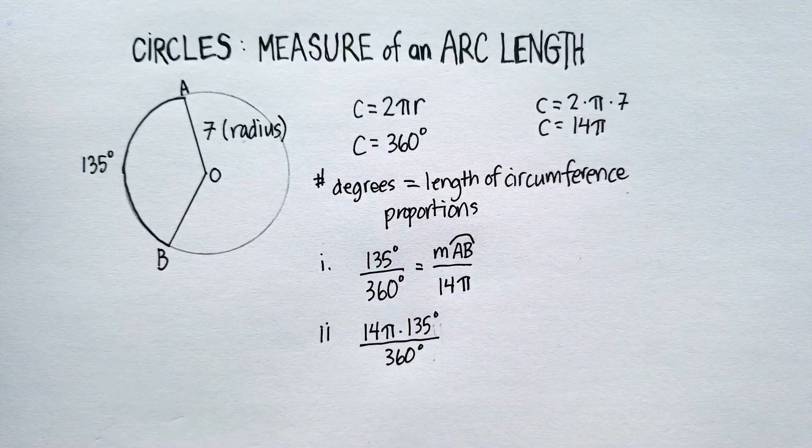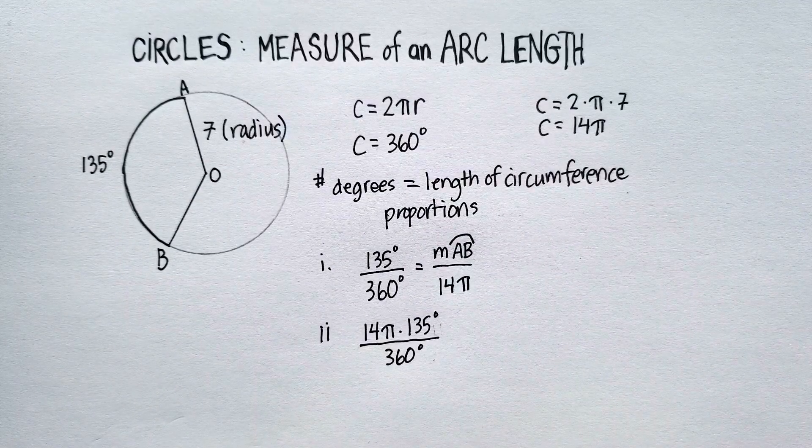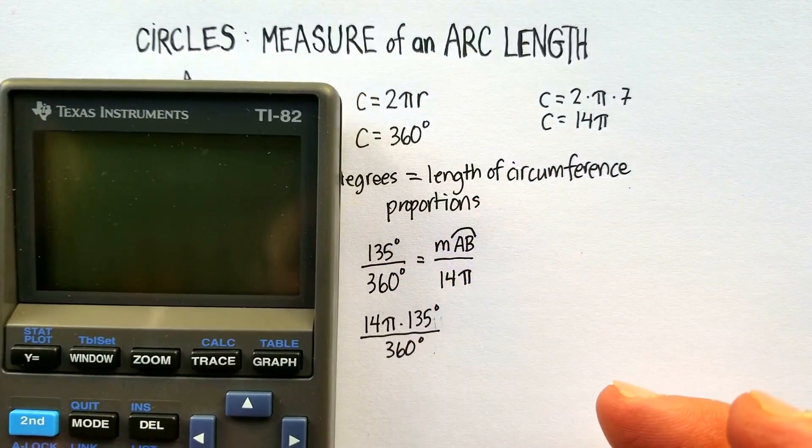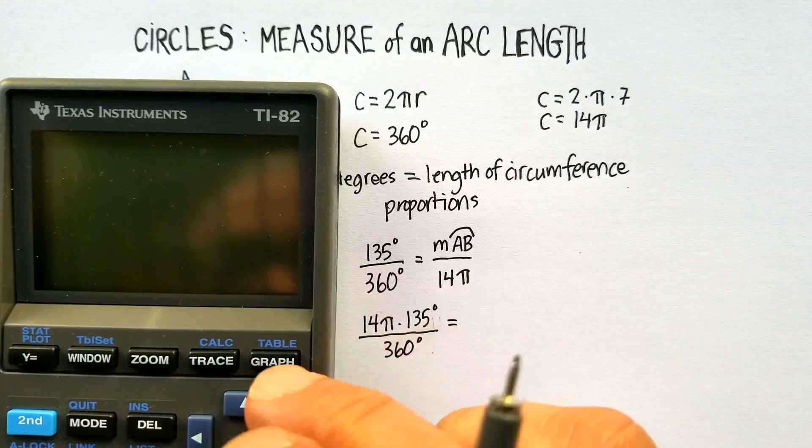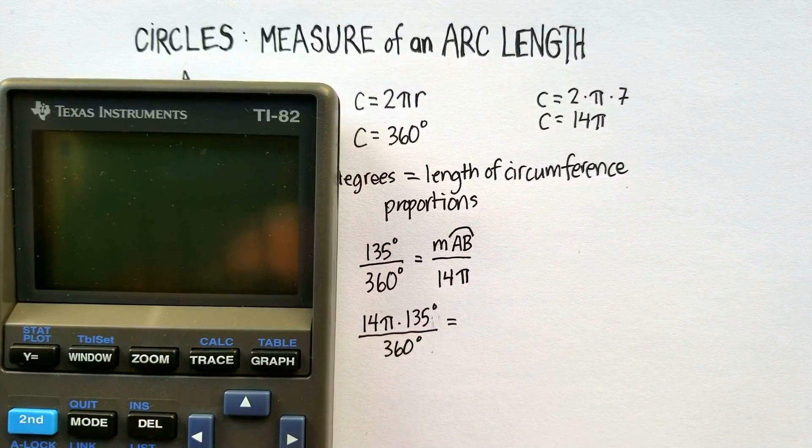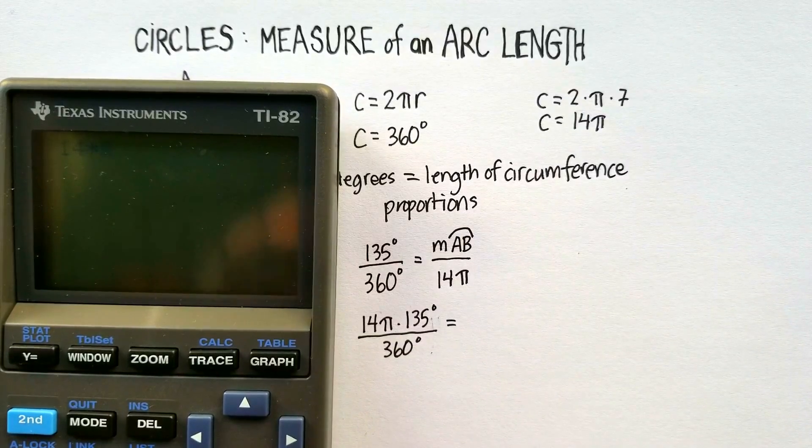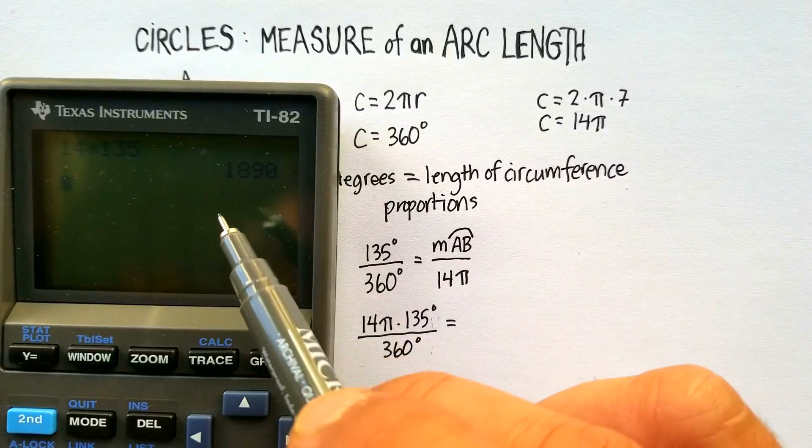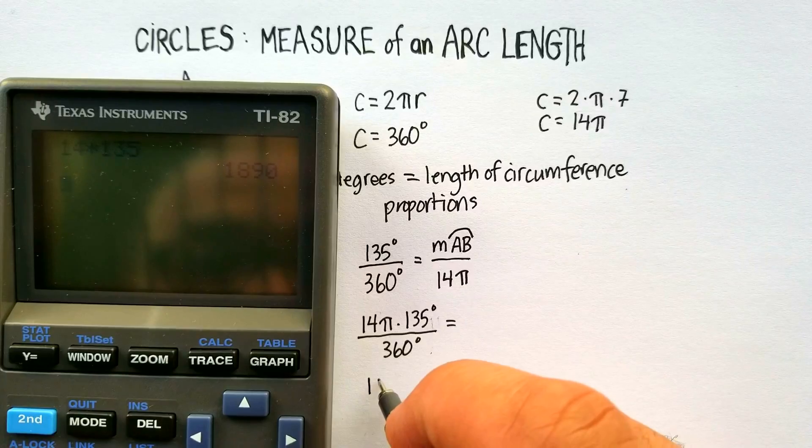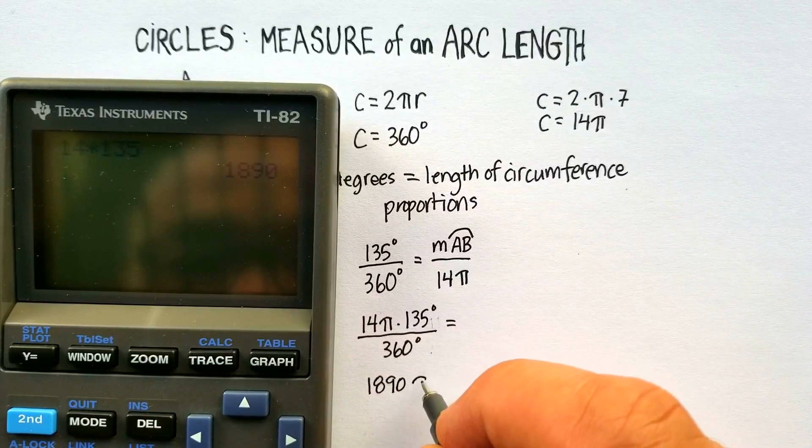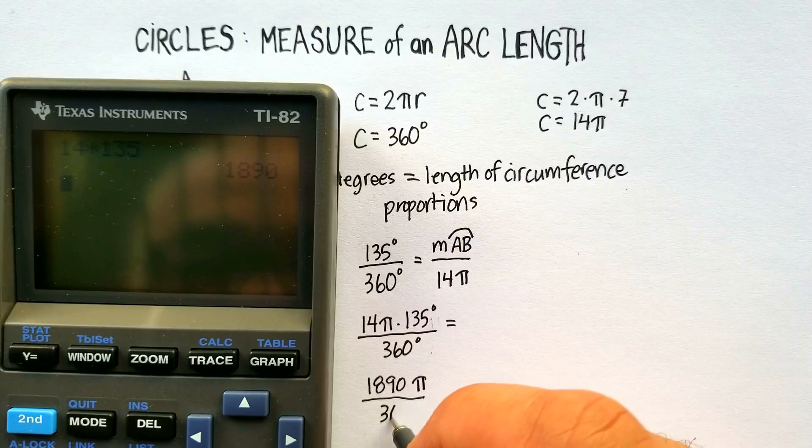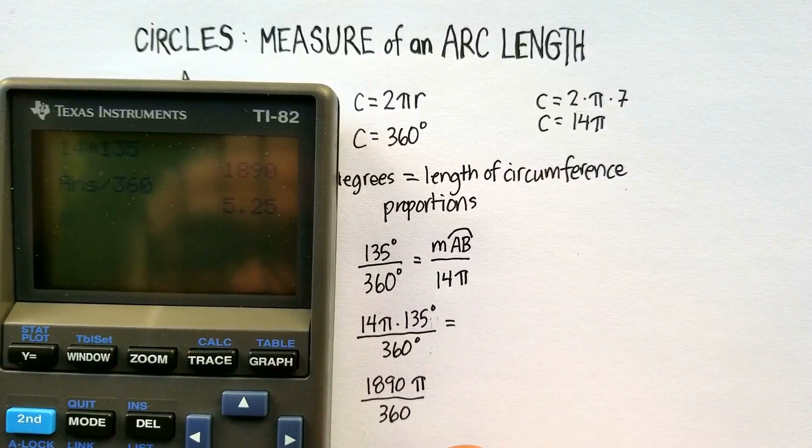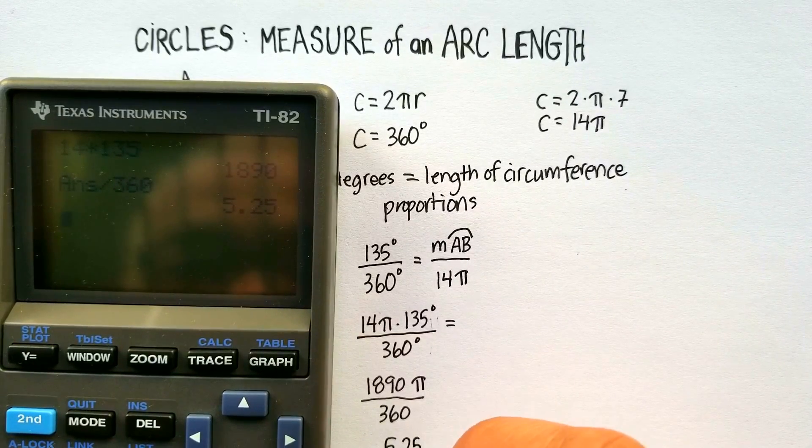I'll use my calculator. And I can come up with, let me just put this here. So I know that 14 times 135 is equal to 1,890 pi, and we're going to divide that by 360. Divided by 360. And we get 5.25 pi.